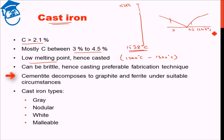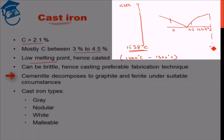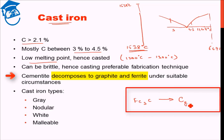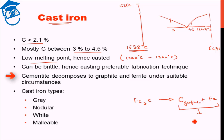As you can see, we will have cementite formation because at 6.67% we have cementite. However, cementite is not the most stable phase. Cementite under favorable conditions would like to convert itself to graphite and ferrite. So Fe3C under favorable conditions would like to convert to graphite — carbon in the graphite form — and ferritic iron. This is the most stable phase in terms of energy; cementite is metastable. It is important to note that cementite might decompose to graphite and ferrite under suitable conditions.